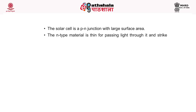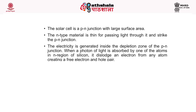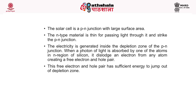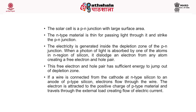The solar cell is a p-n junction with a large surface area. The n-type material is thin to allow light to pass through and strike the p-n junction. Electricity is generated inside the depletion zone of the p-n junction. When a photon of light is absorbed by an atom in the n-region of silicon, it dislodges an electron, creating a free electron and a hole pair. This pair has sufficient energy to jump out of the depletion zone. If a wire is connected from the cathode at n-type silicon to the anode of p-type silicon, electrons flow through the wire, creating electric current.